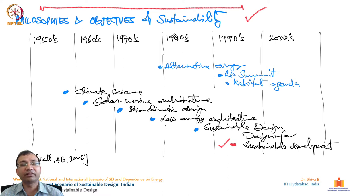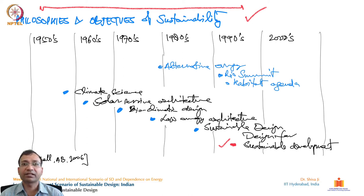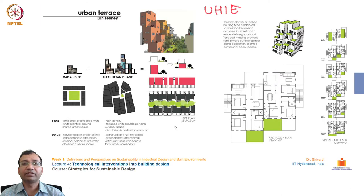From there it actually started happening in India. This reference is taken from Ashok Bilal Architects. He is a famous architect based out of New Delhi and a great thinker who has designed several interesting buildings catering to this goal. Let's see some examples which I have taken to discuss in this lecture.